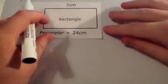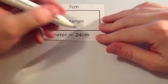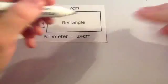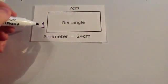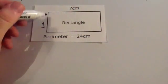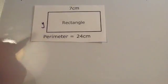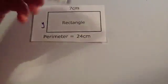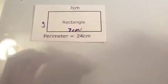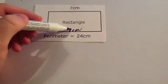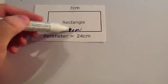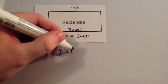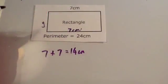We're now going to look at a slightly different question. We've got a rectangle and they've given us the perimeter — the distance around the rectangle is twenty-four centimetres. The question asks us to find the length of y. The top is seven centimetres, which means the bottom is also seven centimetres. So seven plus seven is fourteen — the top and bottom together are fourteen centimetres.